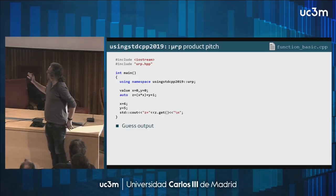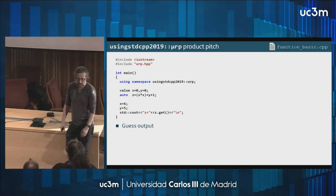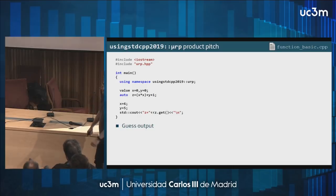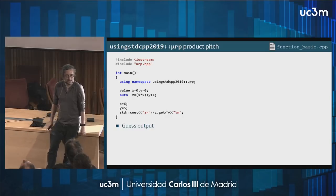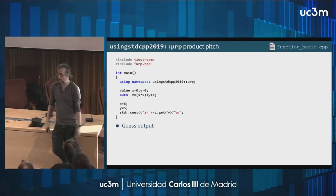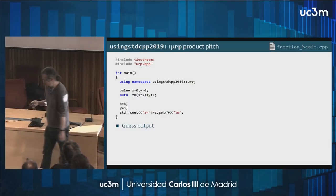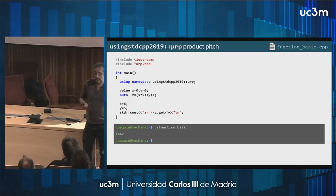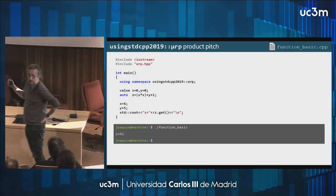The code is pretty clear. I'm declaring two objects, x and y, of some undisclosed type, value-initialized to zero. Then I define z as x times x plus one, plus y plus one. Then I set x to 6 and y to 5. The obvious question is: what does this program output? You might say it's one, because zero times zero plus zero plus one is one, but in fact the answer is 42 — because z is a reactive value.